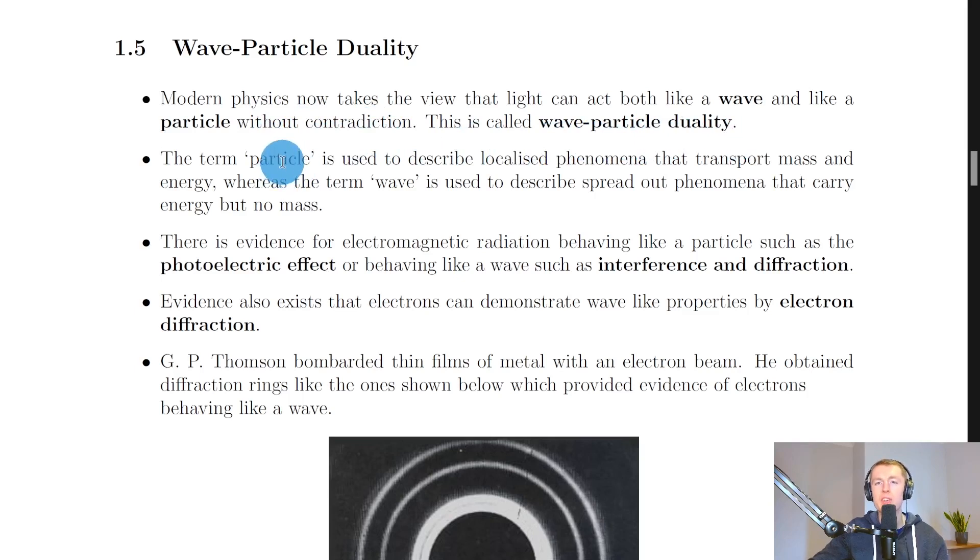We'll just look now at how a particle and a wave actually differ. The term particle is used to describe localised phenomena that transport mass and energy, whereas the term wave is used to describe spread out phenomena that carry energy but no mass. So both particles and waves can carry energy, but remember waves have no mass and particles do have mass. What we mean by localised phenomena is that particles can have a well-defined position, whereas waves are spread out phenomena so they don't have a well-defined position.